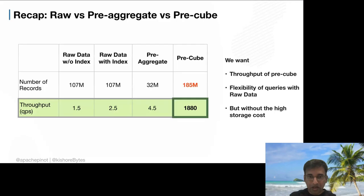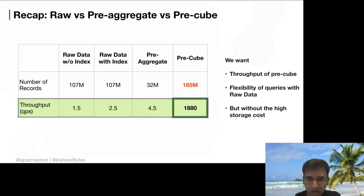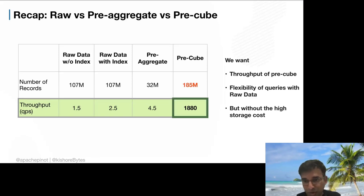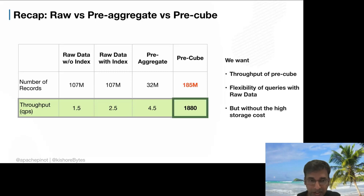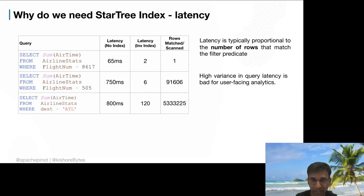Returning to our summary: we have raw data, pre-aggregate, and pre-cube options. What we really want is the throughput of pre-cubing, the flexibility of raw data to answer any question, without the high storage cost or data explosion. We don't want to keep computing all possible cubes or maintain multiple datasets. That's where star-tree index comes in — can we move across the spectrum without paying a large cost?